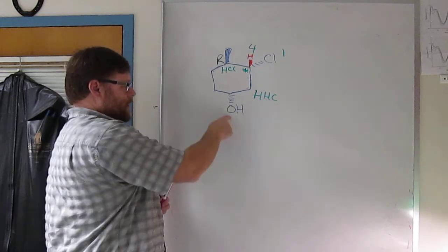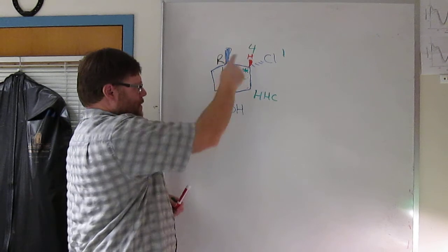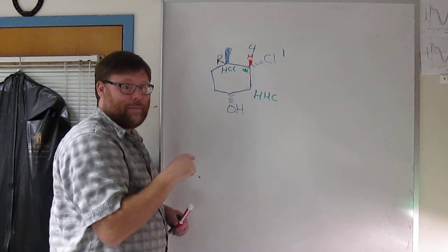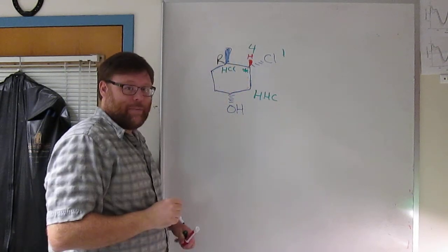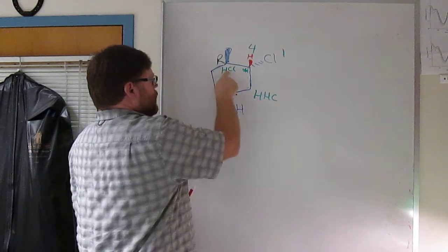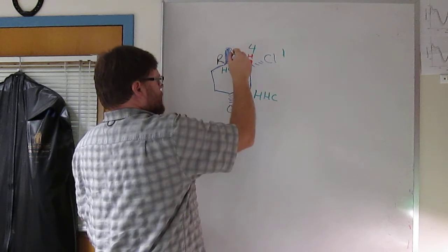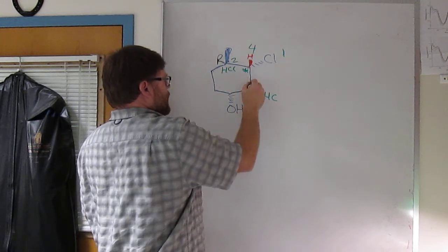This OH doesn't enter into it. The OH is next after the chlorine—the OH is the heaviest atom in the molecule, but it never enters into the calculation up here. So HCC beats HHC, so this is two and this is three.